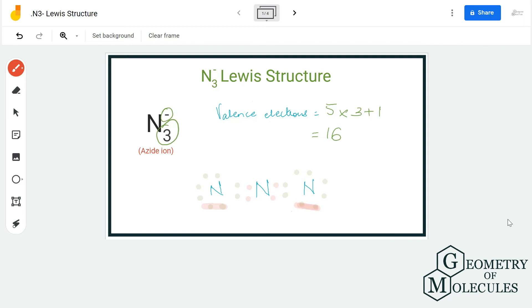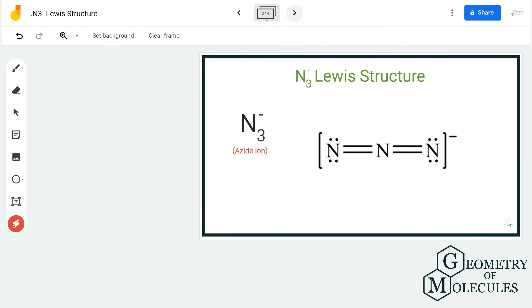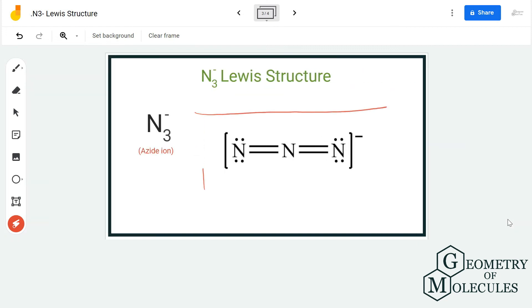Now what will happen is doing this will help us achieve complete octet for the central atom as well. This way all three nitrogen atoms have eight valence electrons in their outer shell. So this is the Lewis structure for azide ion in which there are two double bonds between nitrogen atoms.